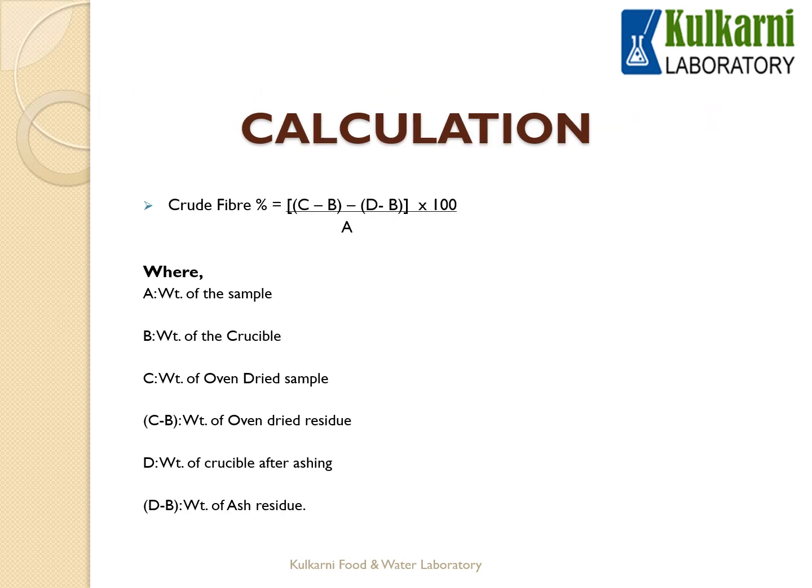After this, the calculation part. The formula for crude fiber percent is: [(C − B) − (D − B)] × 100 / A. Here A is the weight of the sample taken for determination; B is the weight of the empty crucible; C is the weight of the oven-dried sample, so C minus B is the weight of the oven-dried residue; D is the weight of the crucible after ashing, so D minus B is the weight of the ash residue. Putting all values into this formula gives the final crude fiber percent content from your food sample.